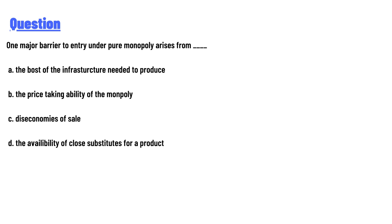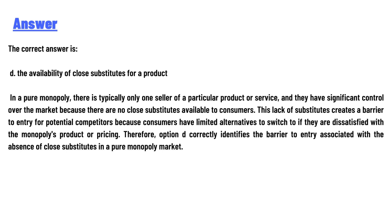...A) the cost of the infrastructure needed to produce, B) the price-taking ability of the monopoly, C) the economies of scale, D) the availability of close substitutes for a product. And the answer to the question is...